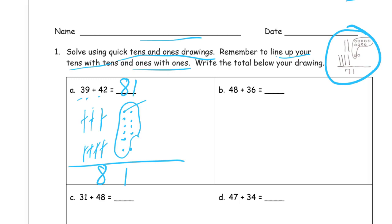48 plus 32. How many tens do I need? One, two, three, four — and I need one, two, three, four, five, six, seven, eight ones.